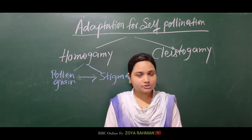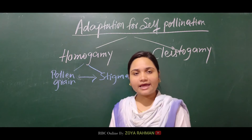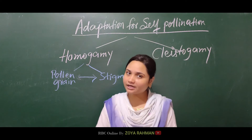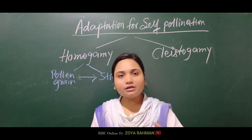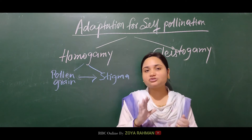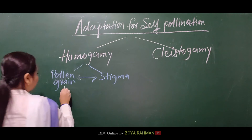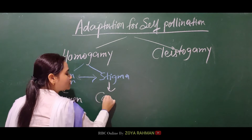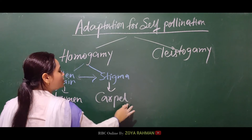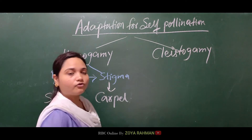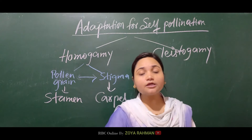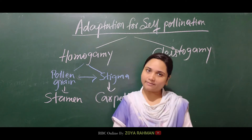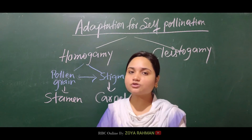The pollen grain is a part of the stamen, which is the male part. Our stigma is a part of the carpel, which is the female part. Homogamy means that our stamen and carpel will be developed and mature at the same time, so that pollination can occur. That's why we call it homogamy.